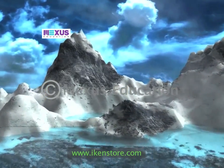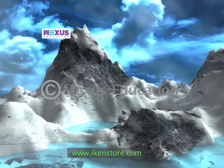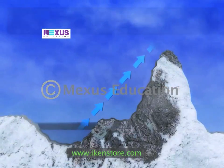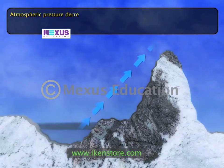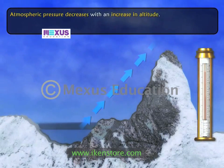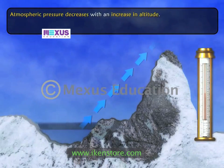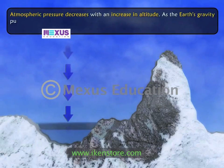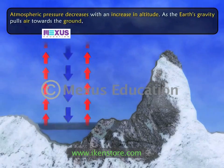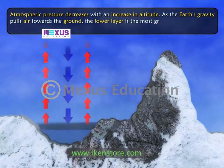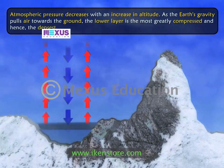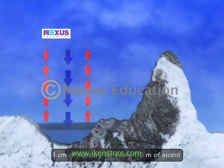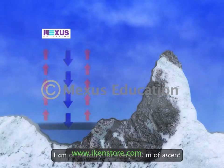Atmospheric pressure depends upon three main factors. The first factor is altitude, as atmospheric pressure decreases with an increase in altitude. The reason is that air is compressible. As the earth's gravity pulls air towards the ground, the lower layer is most greatly compressed. The decrease in pressure is about 1 centimeter of mercury for every 110 meters of ascent.